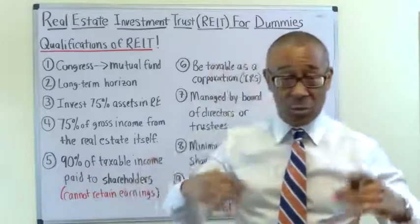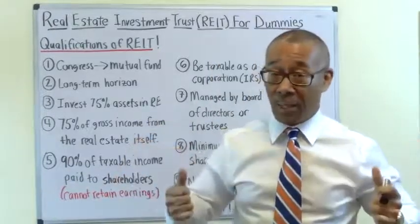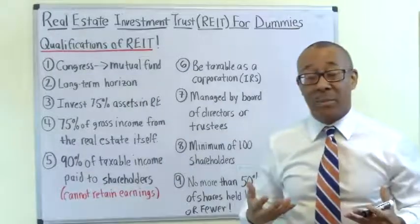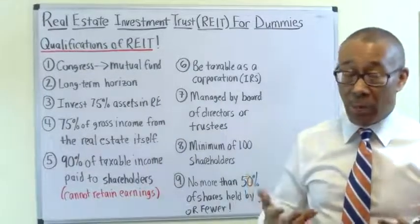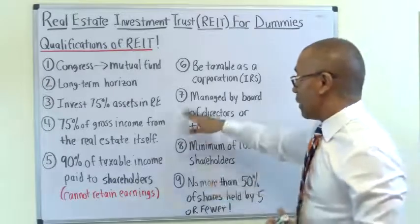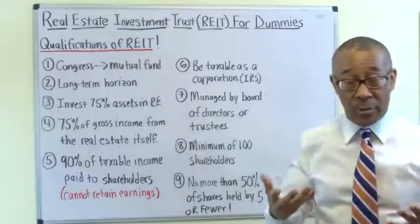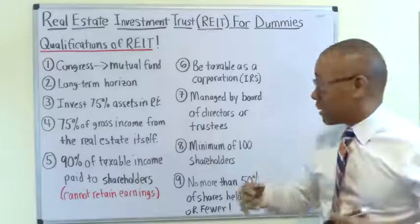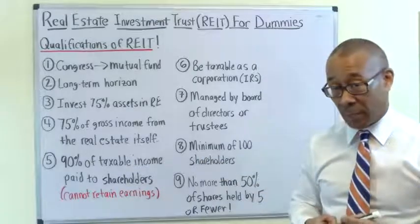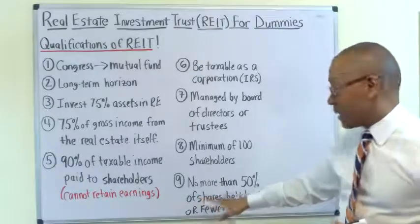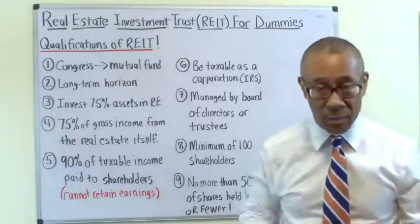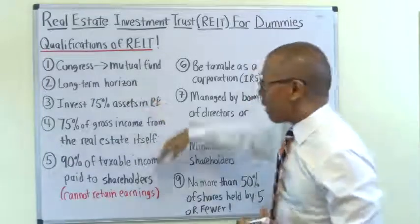Number six, a REIT must be taxable as a corporation per the IRS. The IRS lays out all the rules and oversees REIT qualification. Number seven, a REIT must be managed by a board of directors or a set of trustees. Number eight, there must be a minimum of 100 shareholders in a REIT to qualify. And lastly, no more than 50% of the shares are to be held by five or fewer individuals. These are the many qualifications a REIT must maintain.